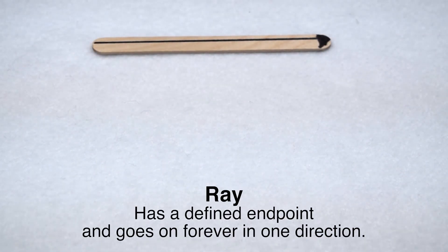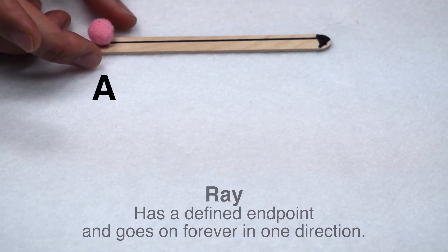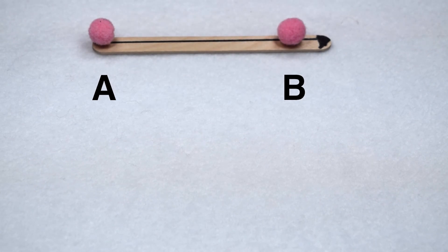There's another way we could take part of a line and that is with a ray. If we have a ray, it has a defined starting point and then it extends on forever in the opposite direction. Again, we could name that ray by using its defined starting point and one other point along the ray. So this would be ray AB.